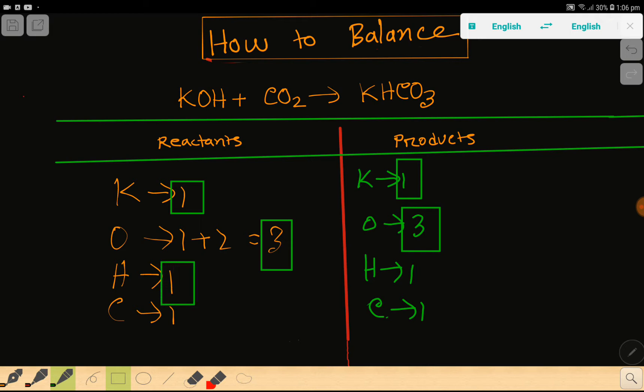On the right side, we have the same: one potassium, three oxygen, one hydrogen, and one carbon. So everything is balanced.